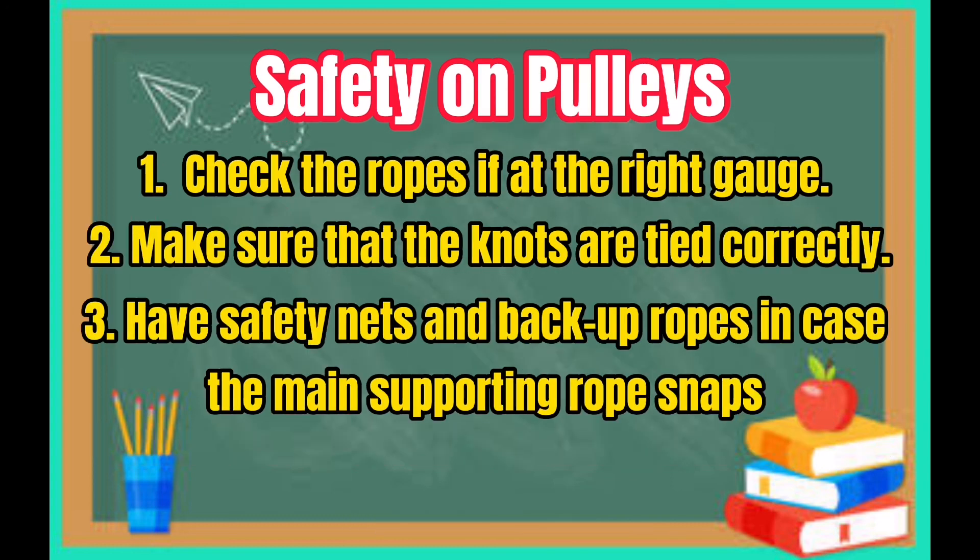Safety on pulleys. Number 1: Check the ropes if at the right gauge. Number 2: Make sure that the knots are tied correctly. And number 3: Have safety nets and backup ropes in case the main supporting rope snaps.